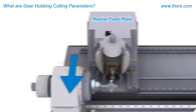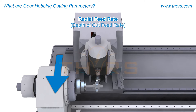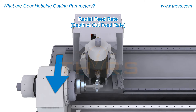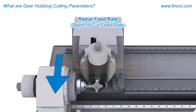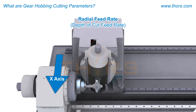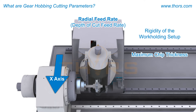The radial feed rate, also referred to as the depth of cut feed rate or just the feed rate, is the speed at which the hob moves in the x-axis direction to control the depth of cut of the gear tooth. Variables that affect the radial feed rates include the rigidity of the work holding setup, the maximum chip thickness, the gear material grade, and the material hardness.